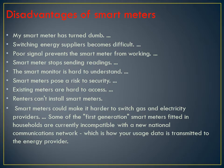There are many disadvantages of smart meters. The smart meter has turned dumb; switching energy supplies becomes difficult. Poor signals prevent the smart meter from working. The smart meter stops sending readings. The smart monitor is hard to understand. Smart meters pose a security risk. Existing meters are hard to access. Renters cannot install smart meters. Some first-generation smart meters fitted in households are incompatible with the new national communications network, which is how your usage data is transmitted.